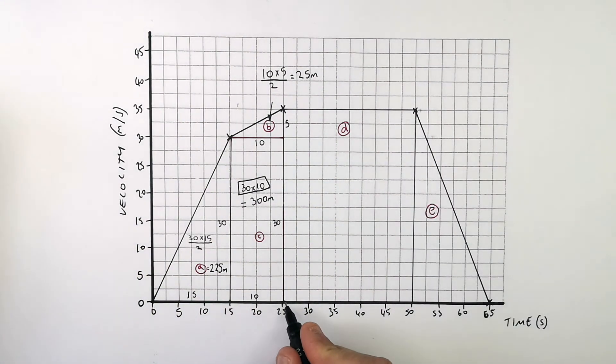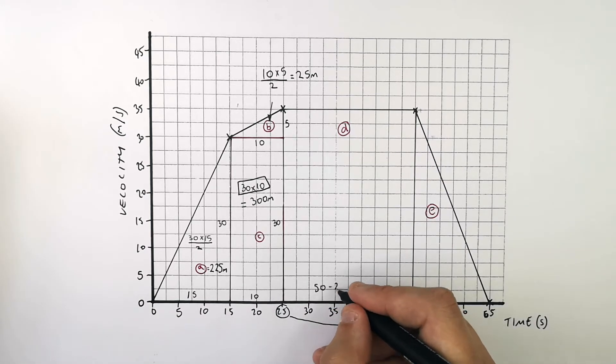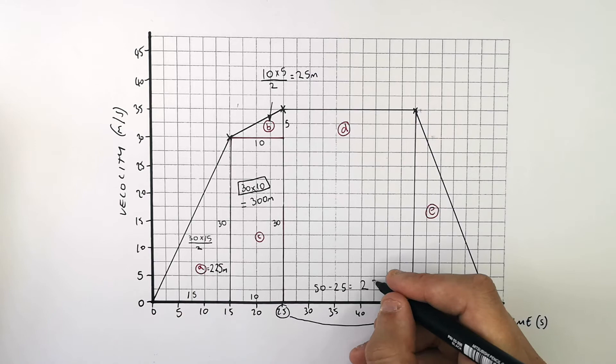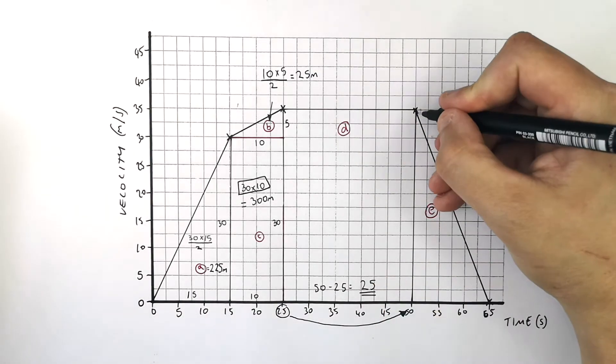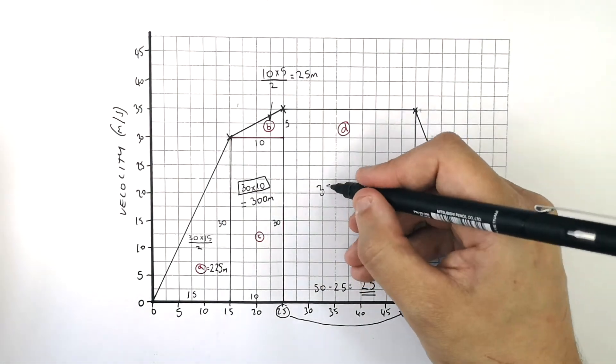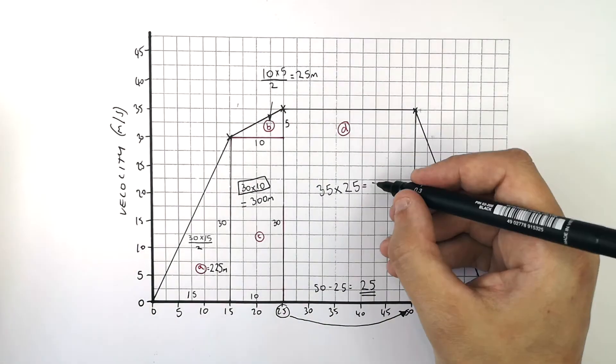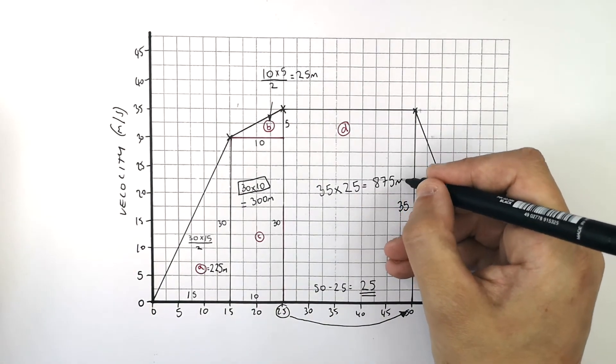So during period D of the journey you use the equation base times height because it's a rectangle. So the base is going to be 50 minus 25 which is 25 times by the height which is 35. So it's 35 times 25 which equals 875 metres.